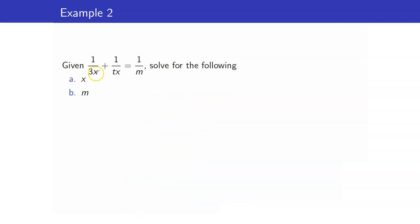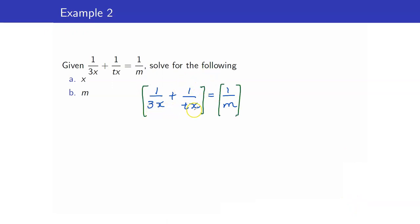Next, let us look at this example. We want to solve for x. The first thing I want to do is to get rid of the denominators. So I will multiply both sides by the LCD. The LCD here consists of the denominators 3x, T, and m. So I multiply both sides by 3x, T, and m. This times this — 3x will get cancelled out, and we are left with T, m.